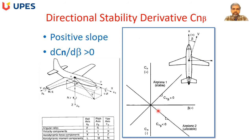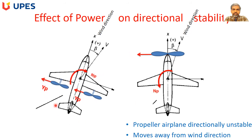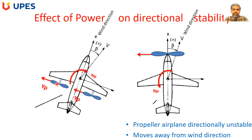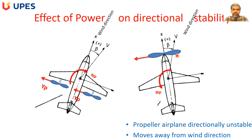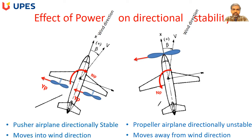The location of the propeller also affects directional stability. A pusher-type aircraft is directionally stable because the yawing moment generated turns the aircraft into the direction of the wind. A conventional tractor-type propeller configuration, on the other hand, steers the airplane away from the wind direction and is therefore a directionally destabilizing propeller location.